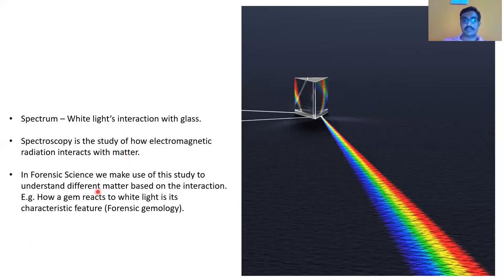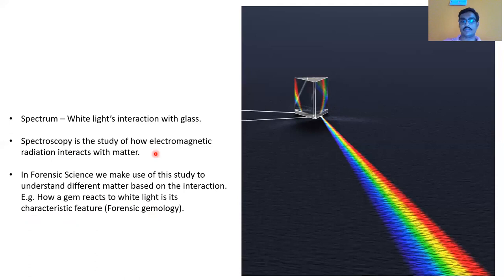We make use of this study to understand different matter based on the interaction. Spectroscopy already documents what is going to happen with specific radiation — for example, infrared radiation hitting glass. Now we study different matter based on those documented interactions. In forensic gemology, for instance, placing a gem in white light produces characteristic features. Spectroscopy already documents all these interactions when different electromagnetic radiation hits matter, and we use that knowledge to identify samples.